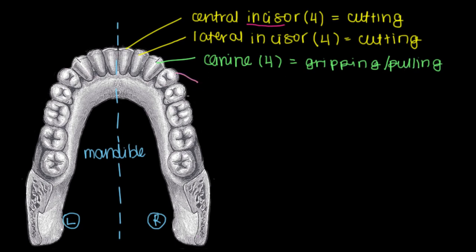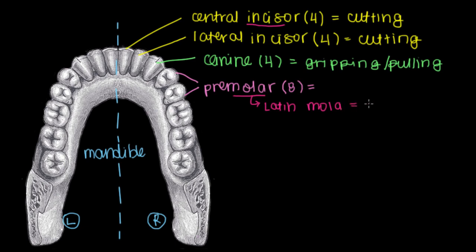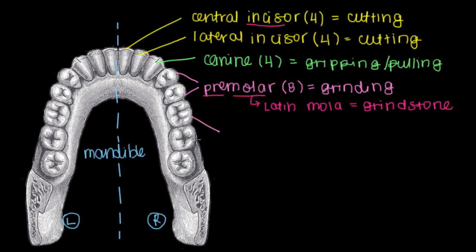Now let's talk about our premolars. We have two on each side, which means in total we have eight premolars. The word 'molar' comes from the Latin word 'mola,' which means grindstone — those were called mola in Latin. That makes sense because our premolar teeth are used for grinding down our food as we chew. The first part of the word, 'pre,' tells us that these two premolar teeth come before the final molar teeth.